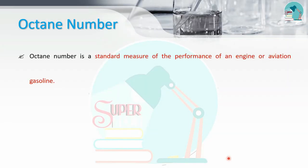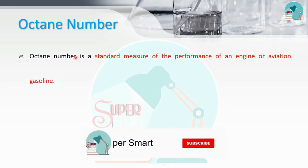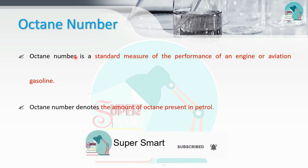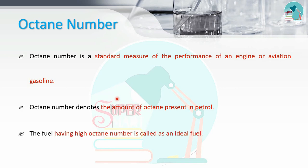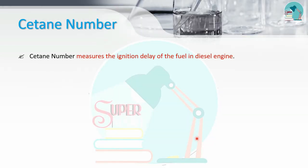Octane number is a measure of engine performance for petrol engines. A fuel with a high octane number is the ideal fuel. Cetane number is a similar measure for diesel engines.